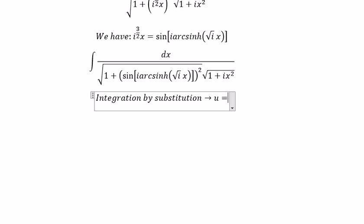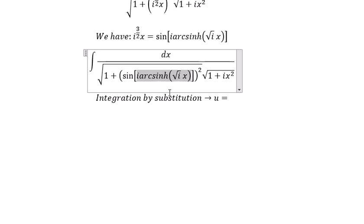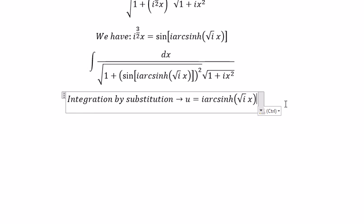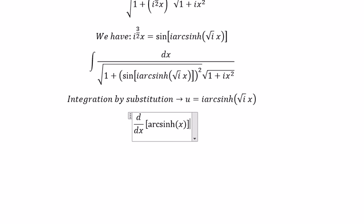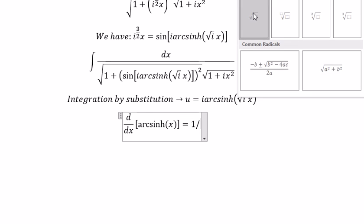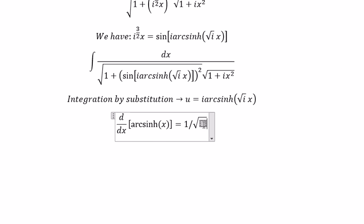We put u equal to this expression and we do the first derivative of this. We know that the derivative with respect to s of arcsin(s) equals 1 over the square root of 1 plus s squared.